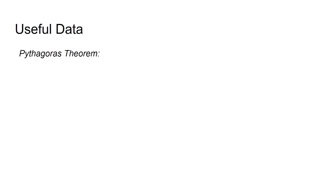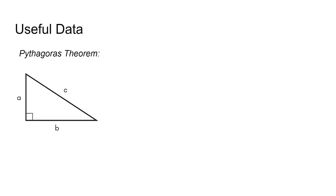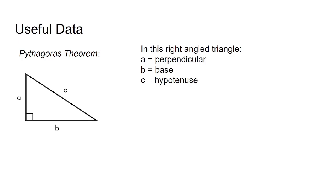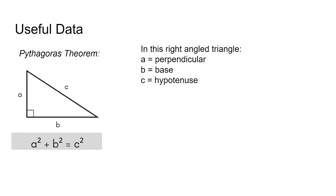Useful data for solving such kind of problem: the Pythagorean theorem is very useful. The Pythagorean theorem states that in a right angle triangle, the square of the hypotenuse is equal to the sum of the square of the base and perpendicular. Suppose in this right angle triangle, c is hypotenuse, b is base, and a is perpendicular, so a² + b² = c².